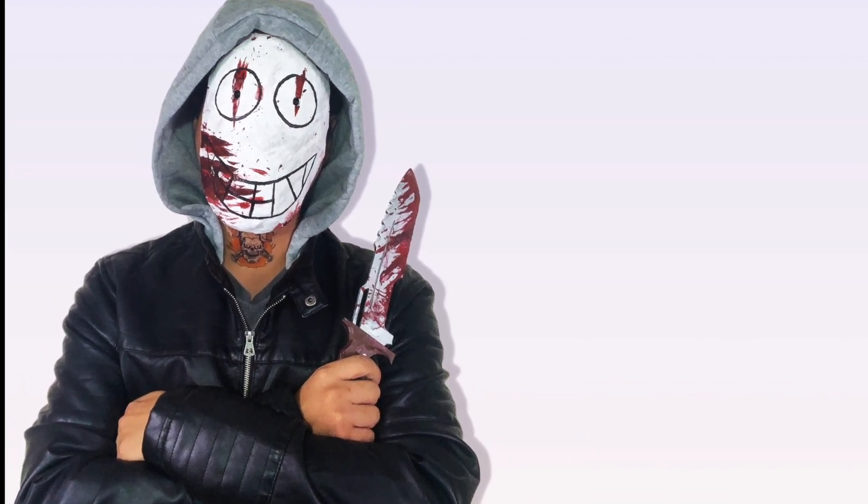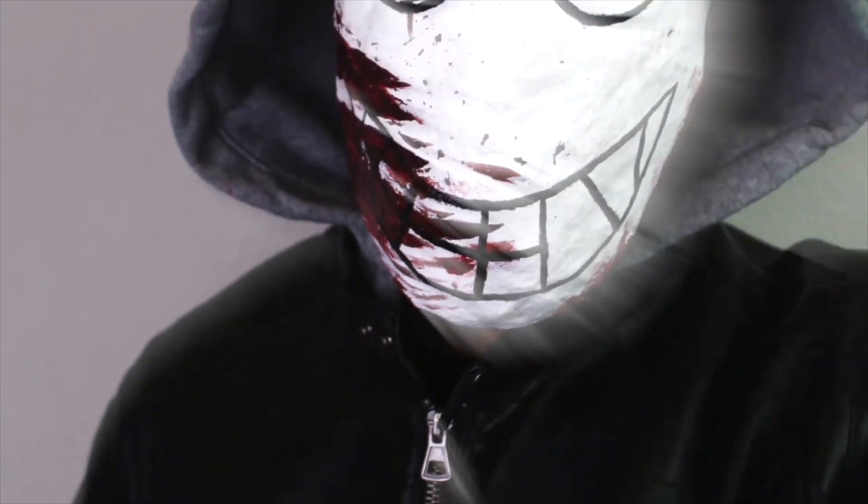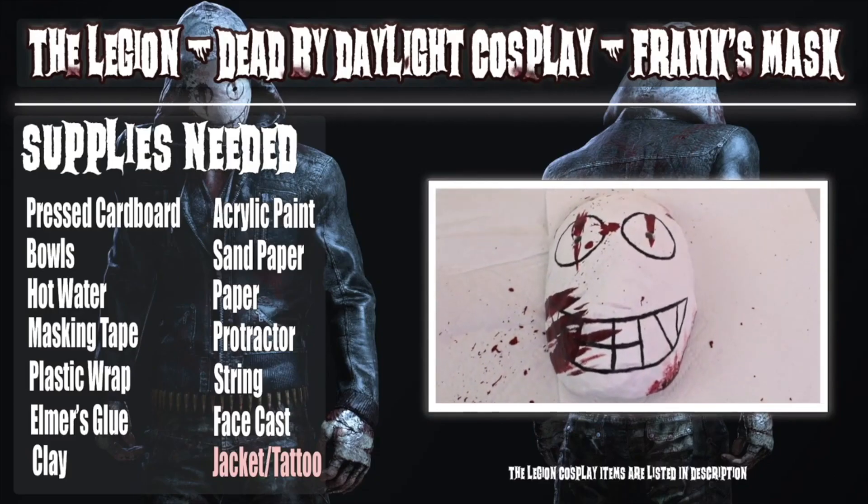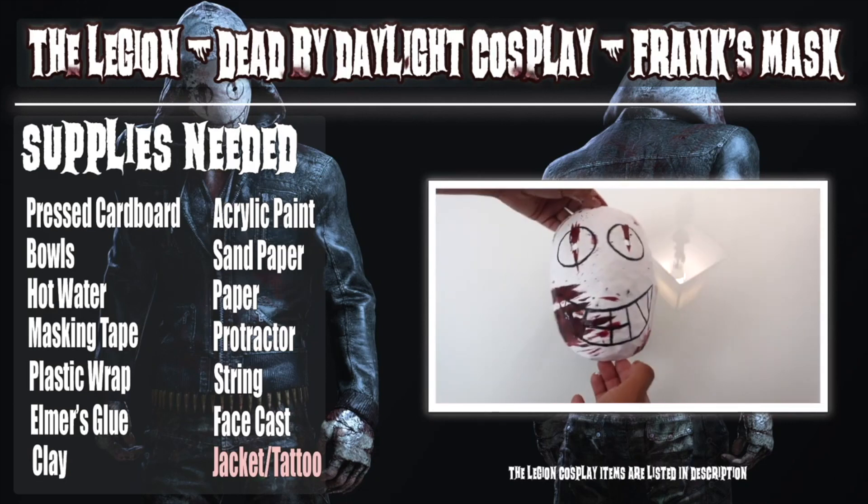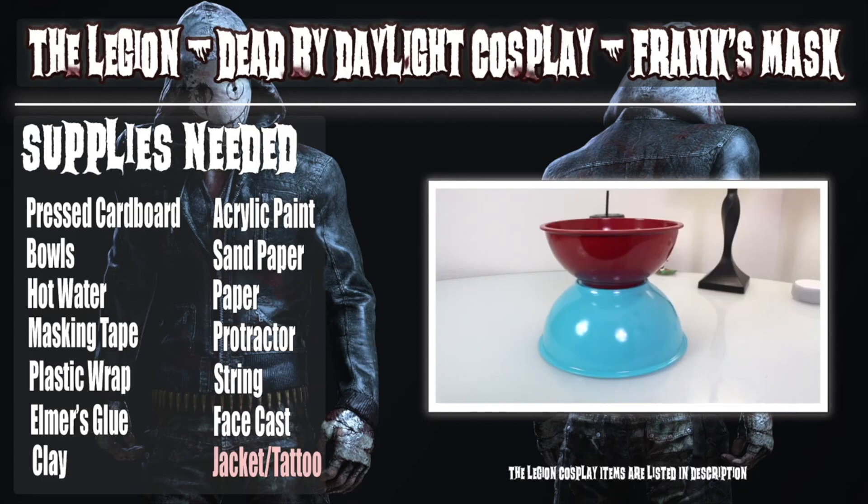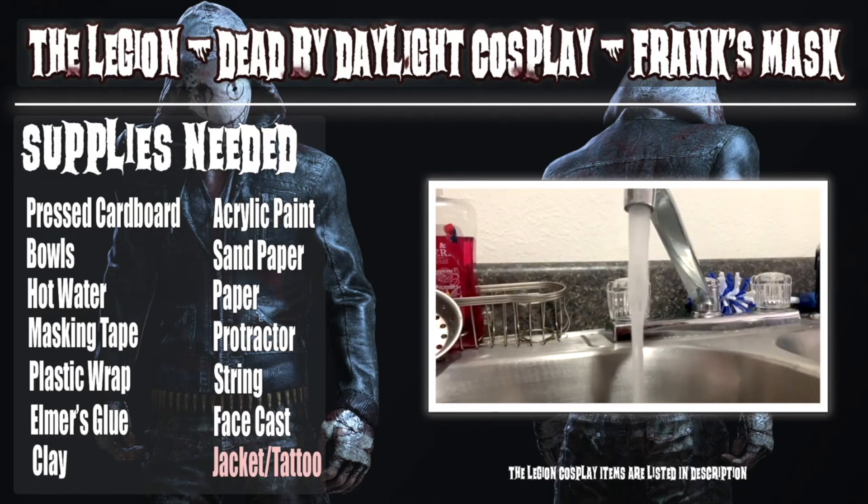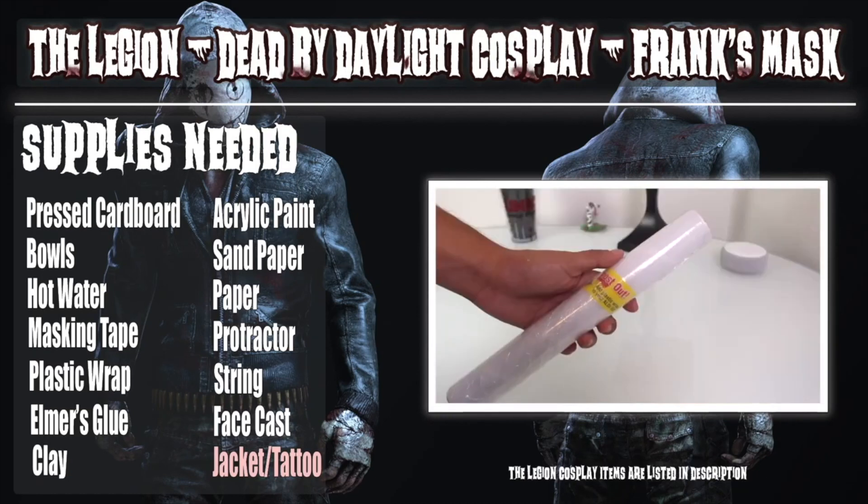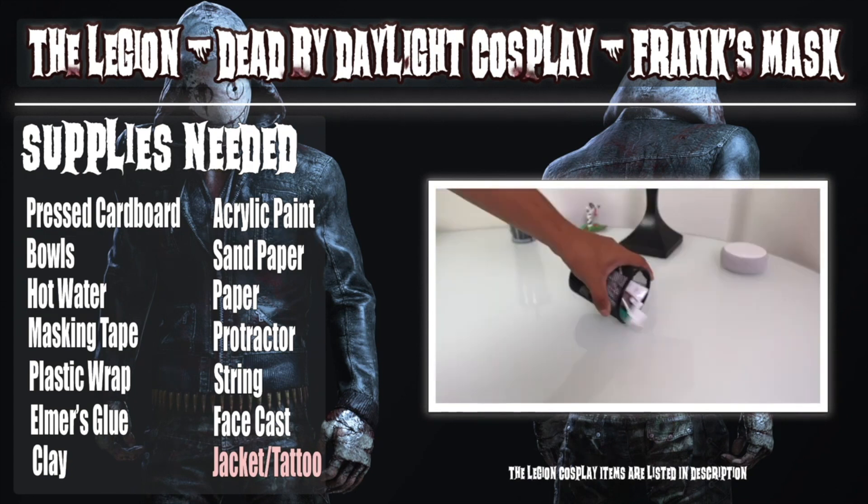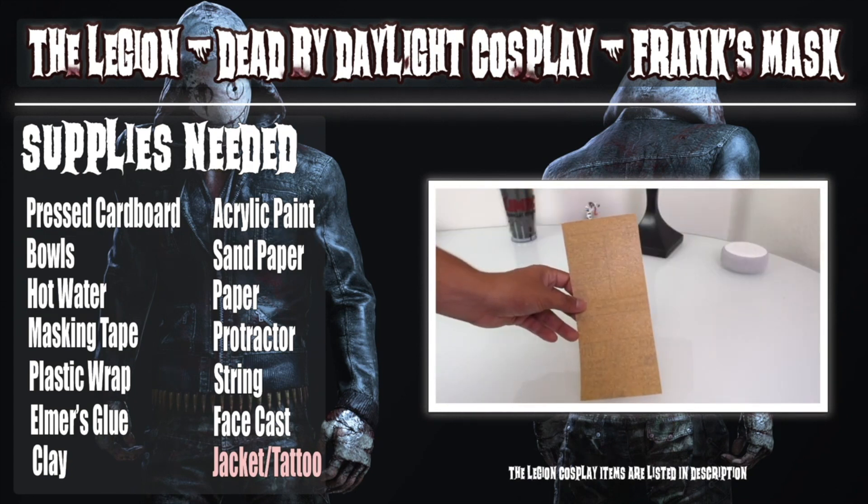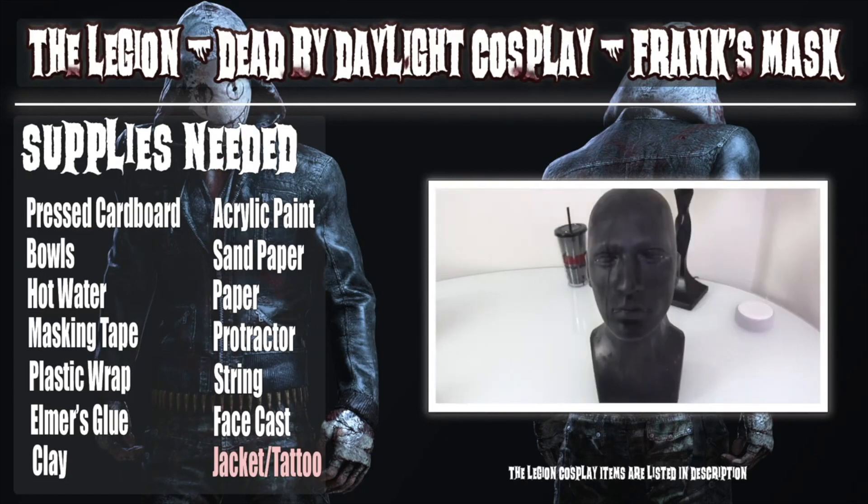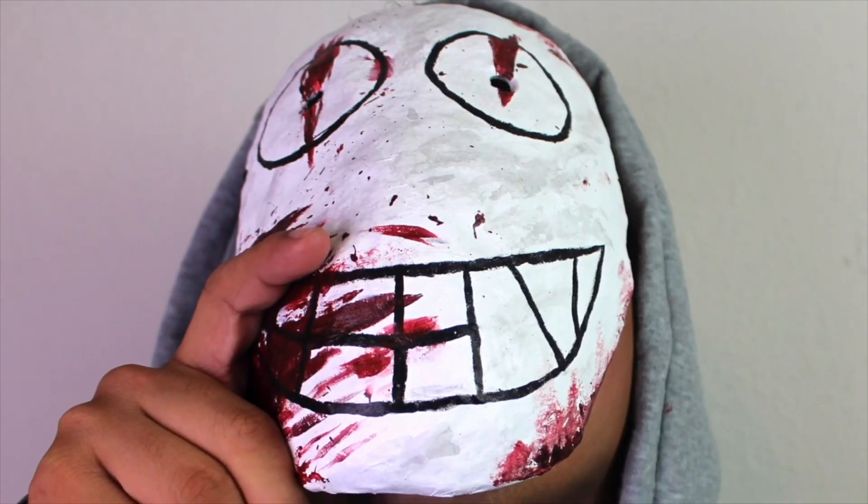So in today's video we will be making the Legion mask from the game Dead by Daylight. To make the Legion mask or Frank's mask you will need the following: pressed cardboard, some bowls, water, masking tape, plastic wrap, Elmer's glue, clay, acrylic paints, sandpaper, paper, a protractor, a face cast, and string. The Legion cosplay costume items are in the description down below.